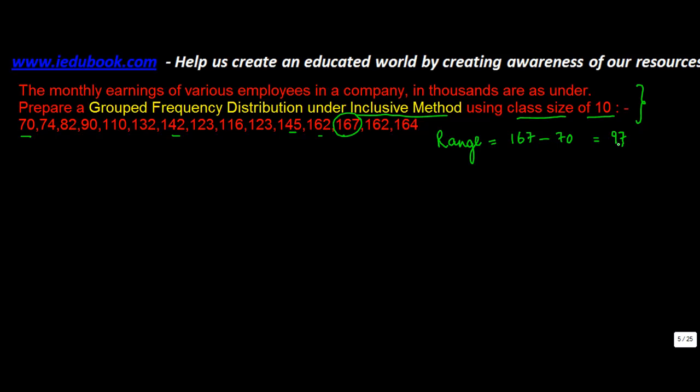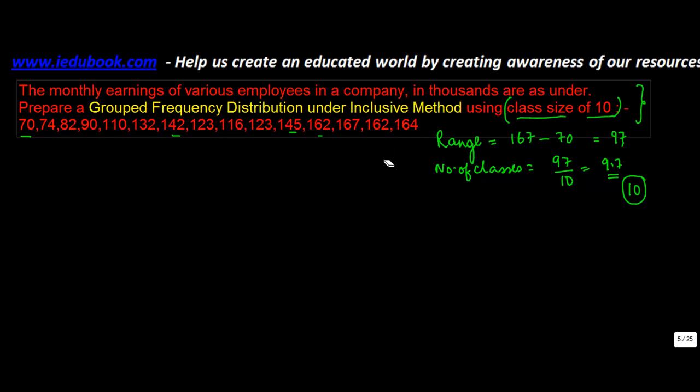The class size is 10, so the number of classes is 97 divided by 10, or 9.7. So let's say 10 classes, right? The only thing is it has to be under the inclusive method.